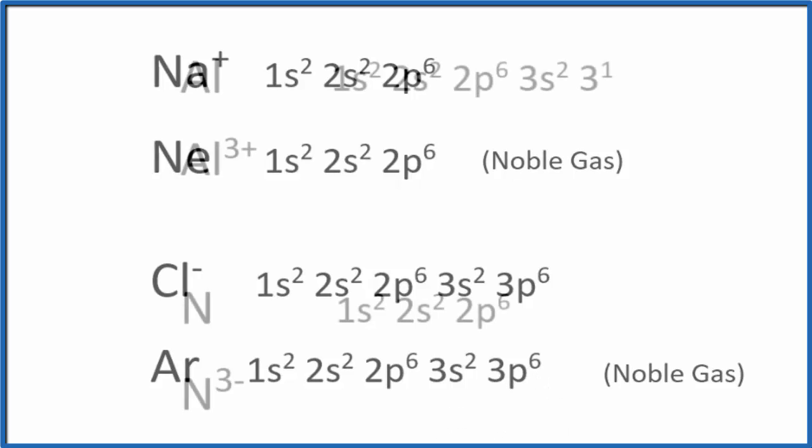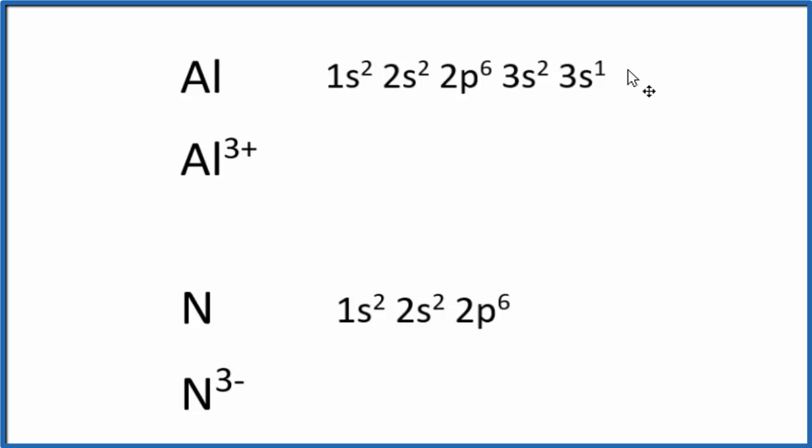Let's do a little bit more practice. So pause and write the electron configuration for the aluminum cation, Al3+, and then the nitride anion, N3-.